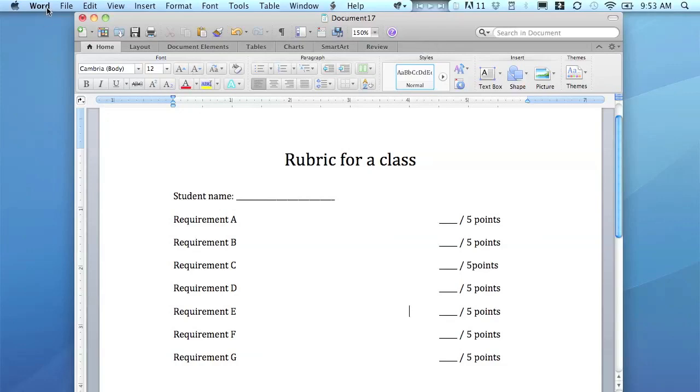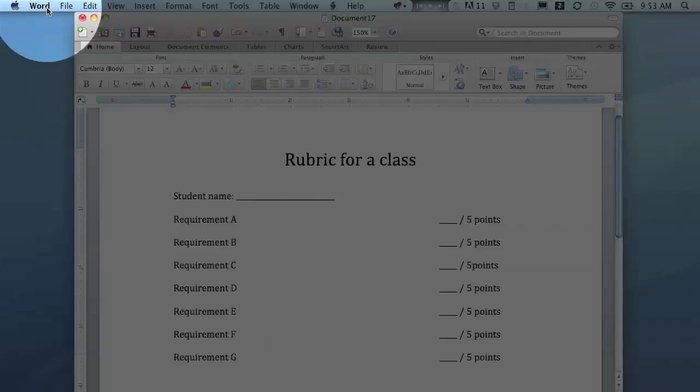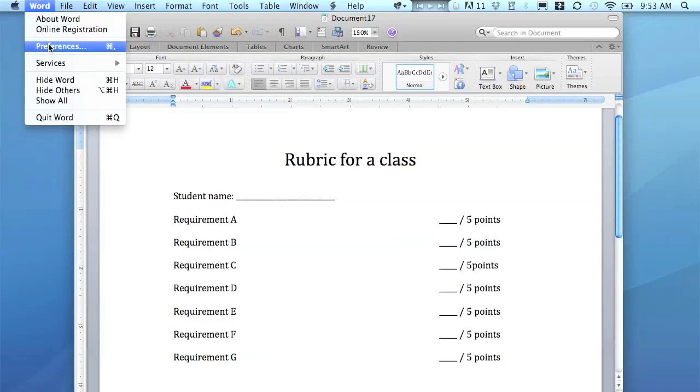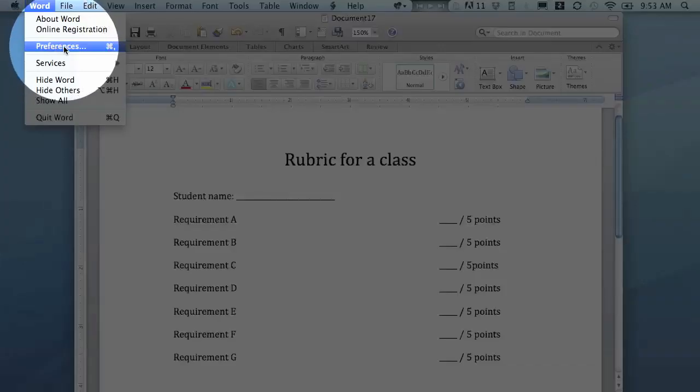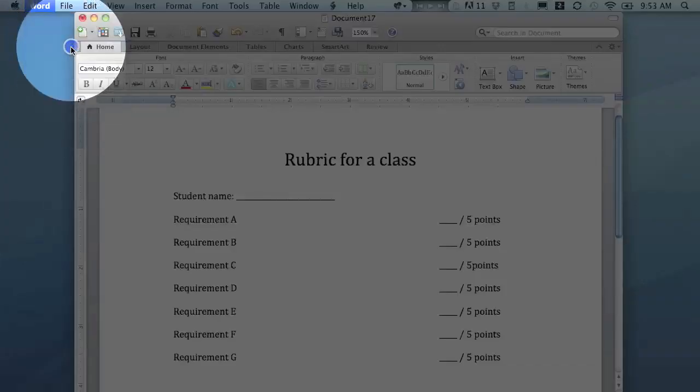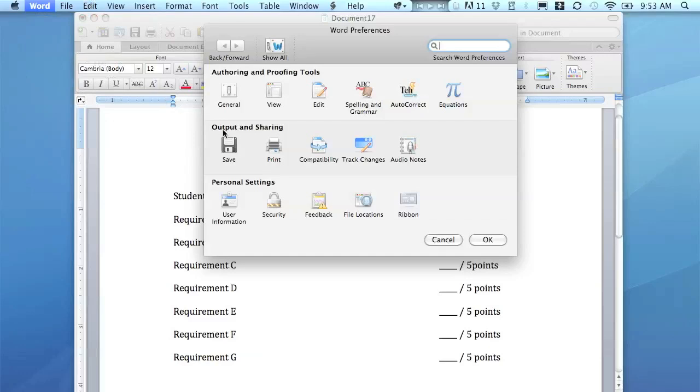Here I've got a little checklist. First thing I've got to do is go up to Word at the top, click on that, scroll down to Preferences. There's a shortcut key, Command+Comma, and then I'm going to click on Ribbon, which is in the bottom right there.